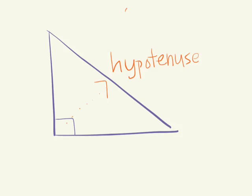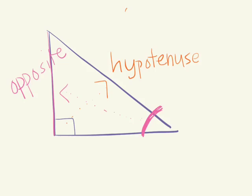Depending on which angle I'm referring to — for example, if I'm referring to this angle here — which side of the triangle would be called the opposite side length? Opposite to this angle. So this side here is located opposite the angle, and this side length does not touch the angle at all. It's opposite from the angle.